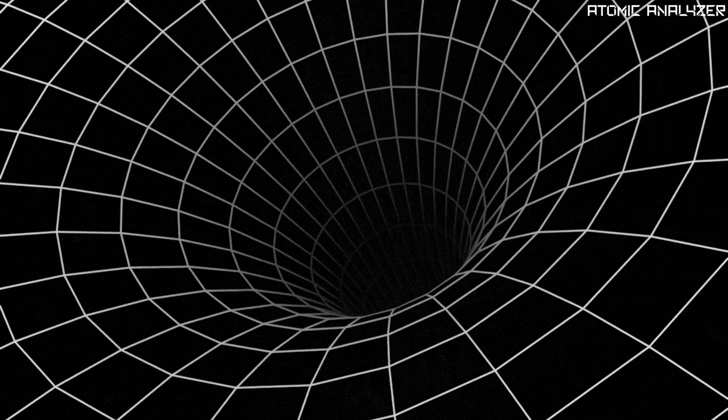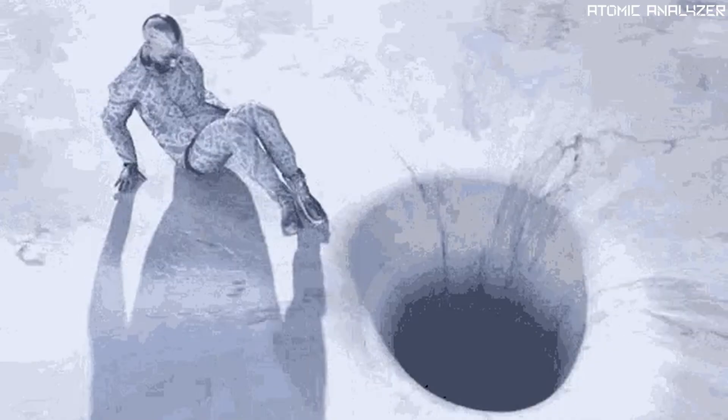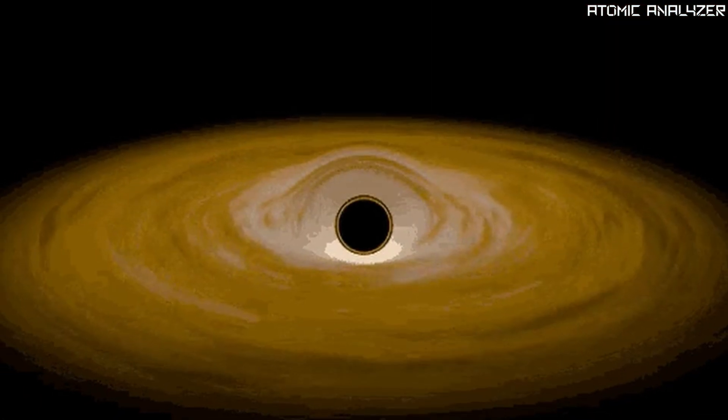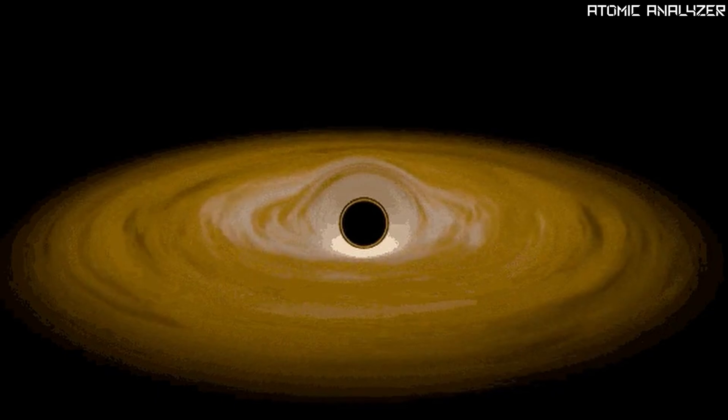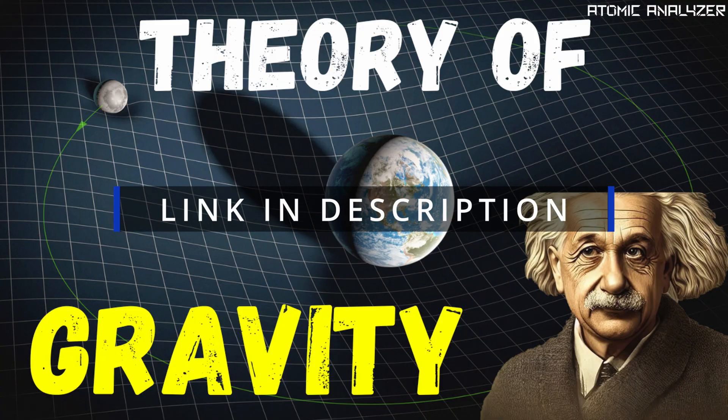Surrounding that singularity is an event horizon, which is not a physical solid boundary but simply the border around a singularity where the gravity is so strong that nothing, not even light, can escape. We know how the universe forms black holes and how they interact with their environments through Einstein's theory of general relativity.